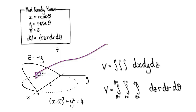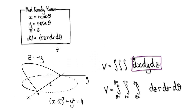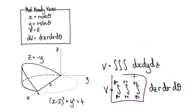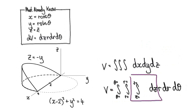Find the volume of this wedge using cylindrical coordinates. To do this, if we convert DV into cylindrical coordinates it's going to give us this — I'm expecting you to know this by now. So this thing here will then become this, and now it's just a matter of setting up our limits of integration.